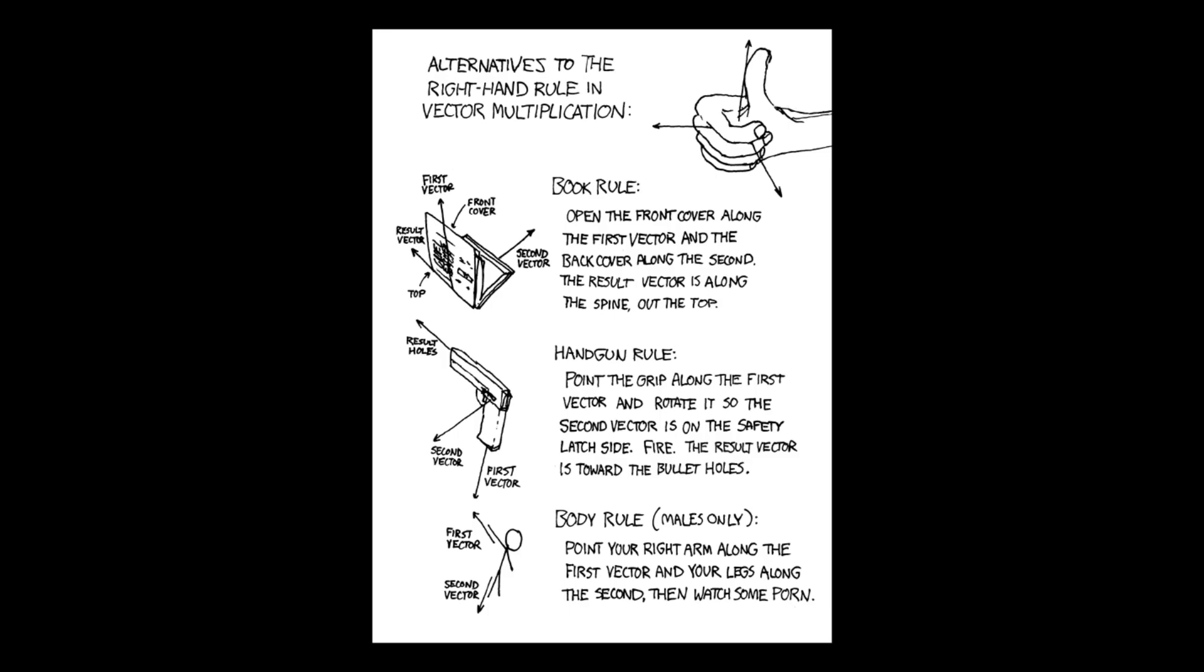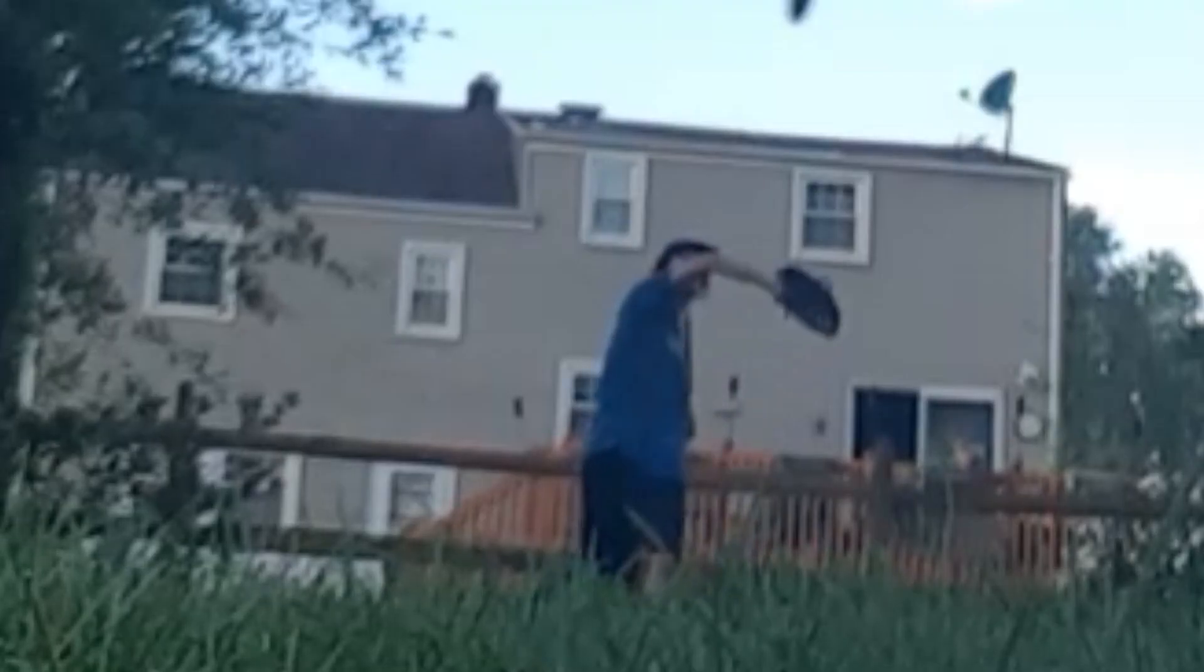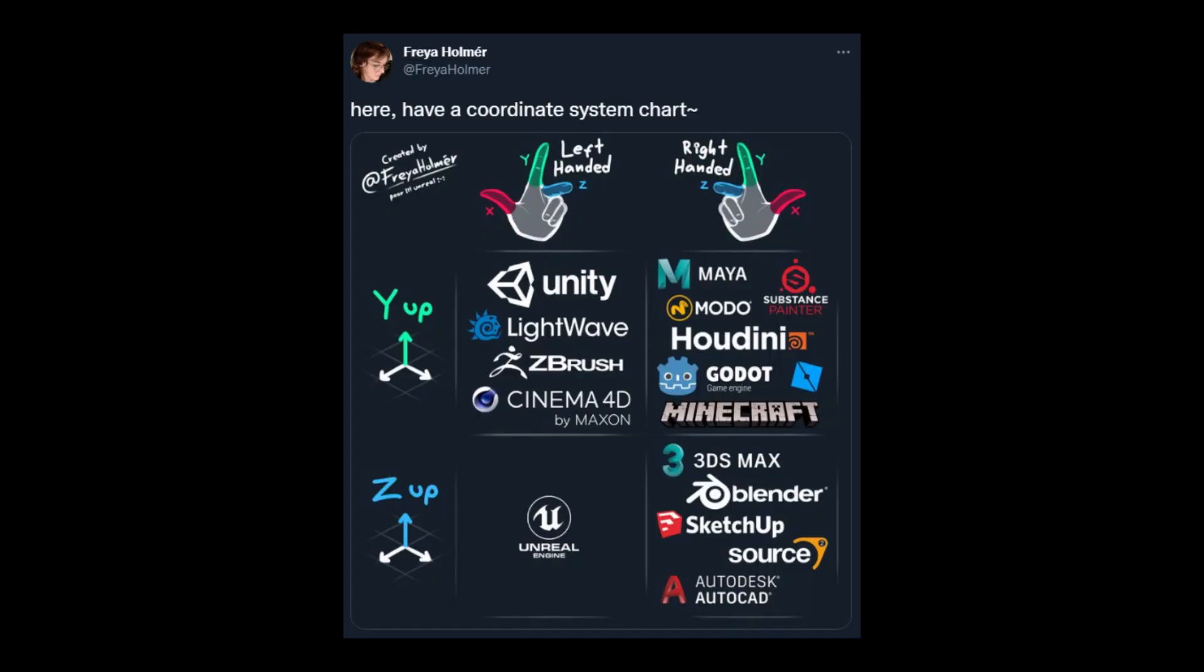And, honestly, in general, the handedness of your coordinate system shouldn't matter too much as long as you assume that everything in your code is going to be either entirely left-handed or entirely right-handed. God damn it, why do we even have standards?